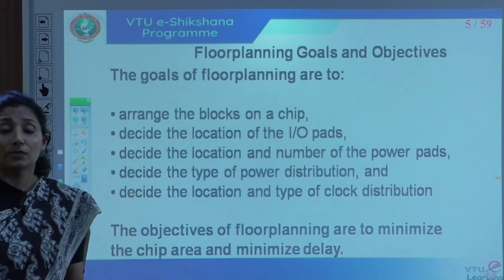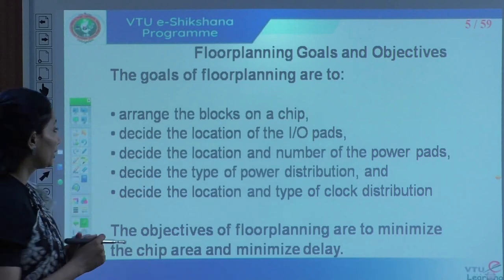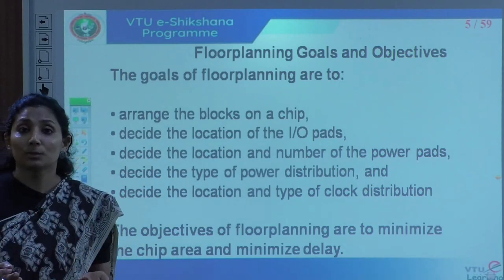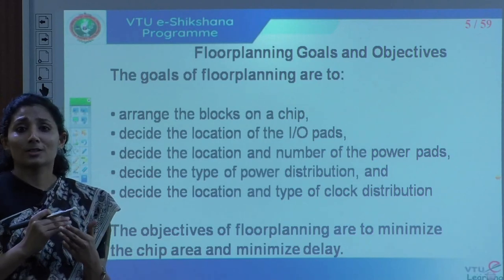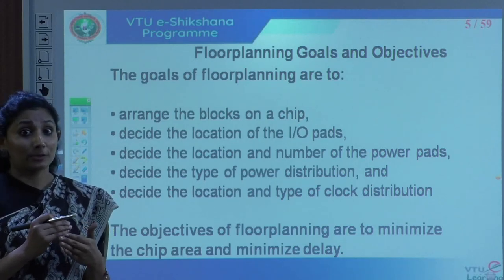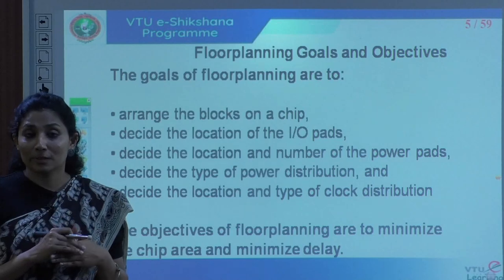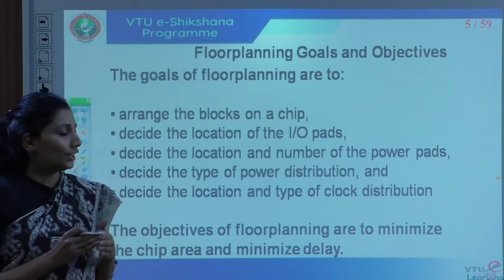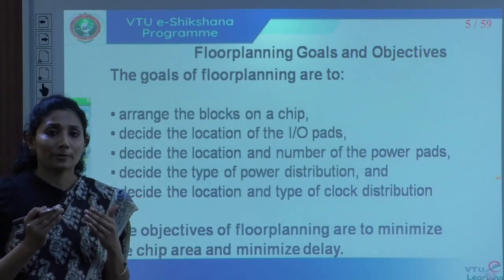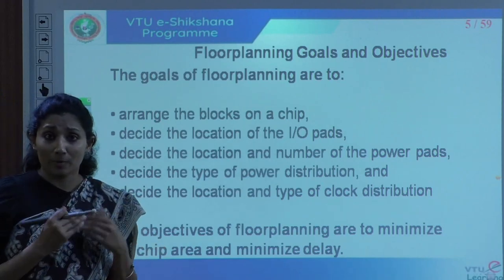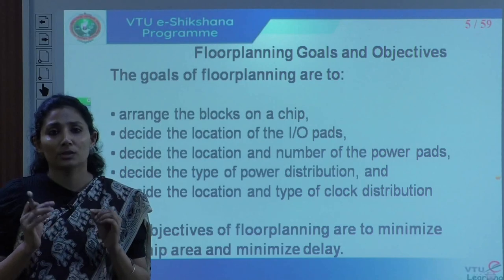The main goals of floor planning are: arrange blocks on the chip; decide the location of IO pads; decide the location and number of power pads — VDD and VSS connections; decide the type of power distribution; and decide the location and type of clock distribution. To avoid clock skew, clock distribution must be planned so that the clock arrival time difference between blocks is minimal.